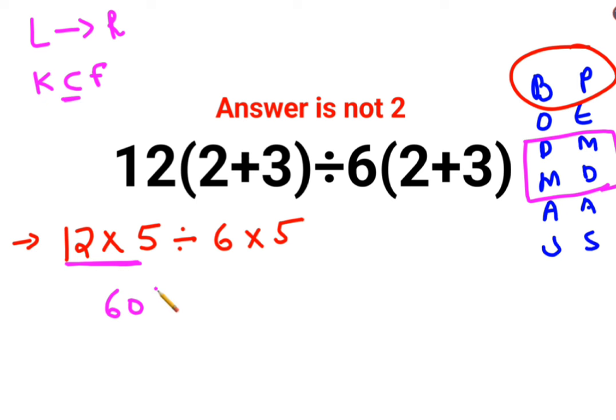K means you keep the first number as it is. C stands for changing the division sign to multiplication, and F stands for reciprocal or flipping. So you flip 6, that gets you 1 upon 6, and you keep the rest as it is.